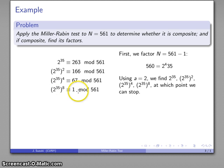We now have a term that's congruent to 1 mod 561, so we look at the preceding term. If this preceding term is not congruent to negative 1, we know that our original number has to be composite.